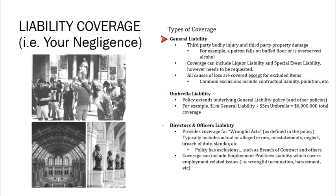General liability provides coverage for all causes of loss except those excluded — contractual liability, pollution, nuclear. Most general liability policies are pretty broad. A standard general liability policy provides $1 million per occurrence with a $2 million annual aggregate, meaning $1 million per claim but $2 million to use per year. Your board might want higher limits, so you can buy an umbrella liability policy, which is simply an extension of your general liability. A small house museum might only need $1 million general liability, while a large house museum with heavy foot traffic might want a $5 million or $10 million umbrella.